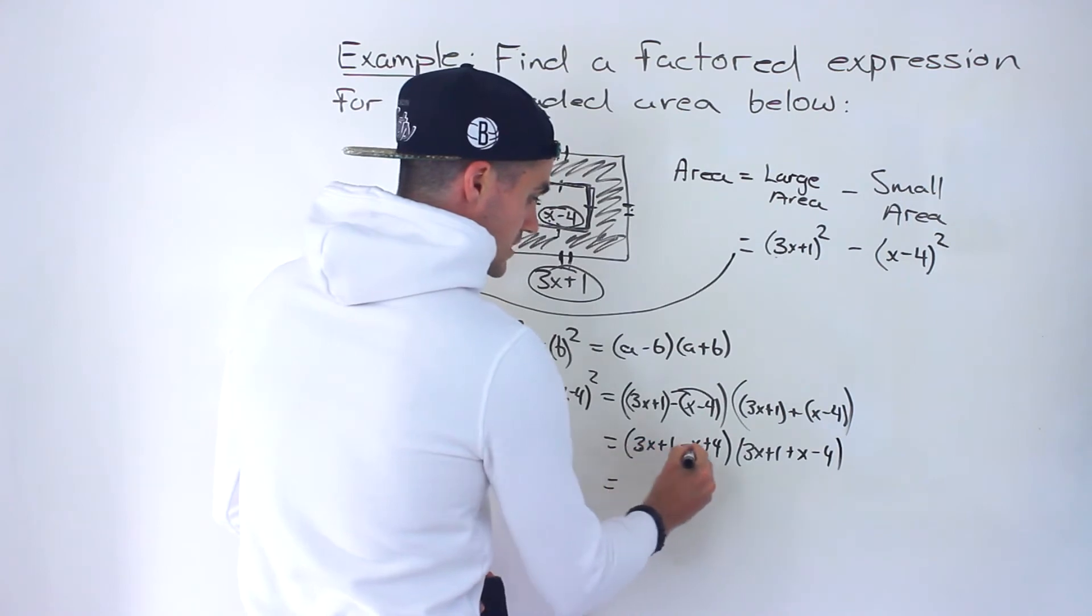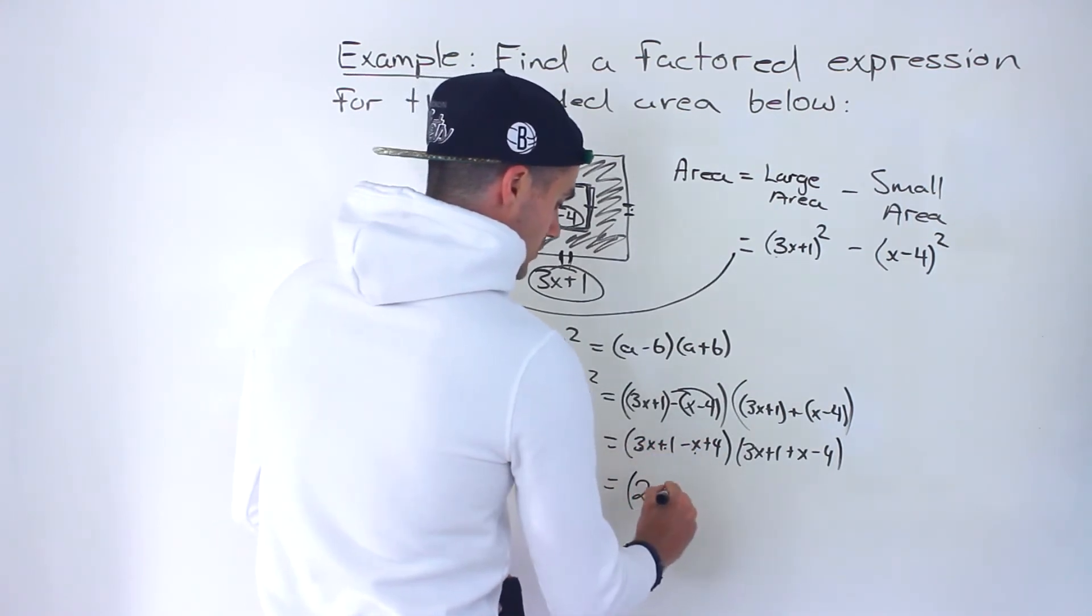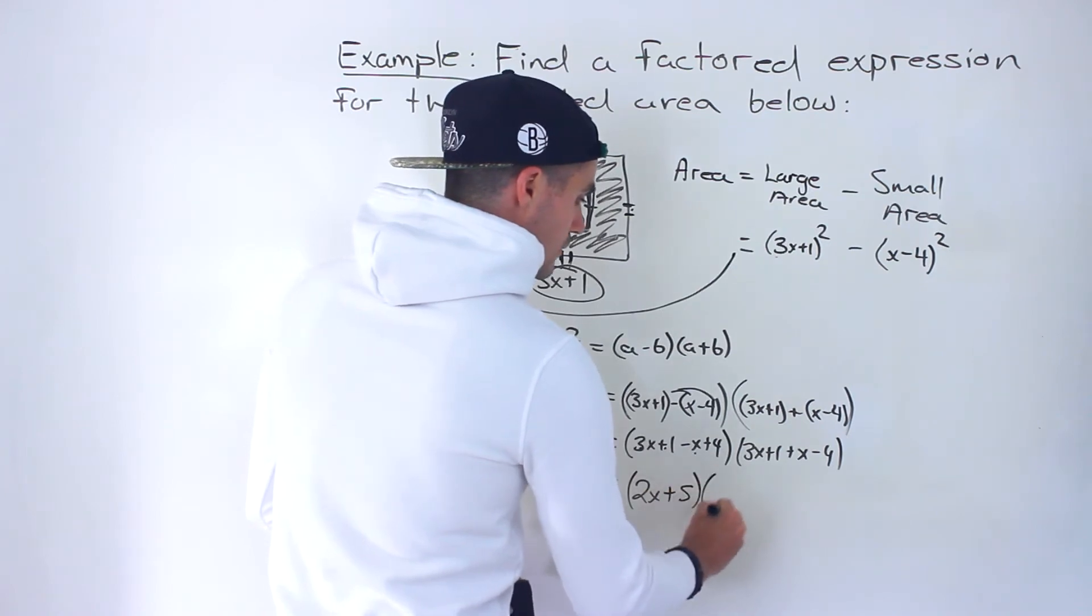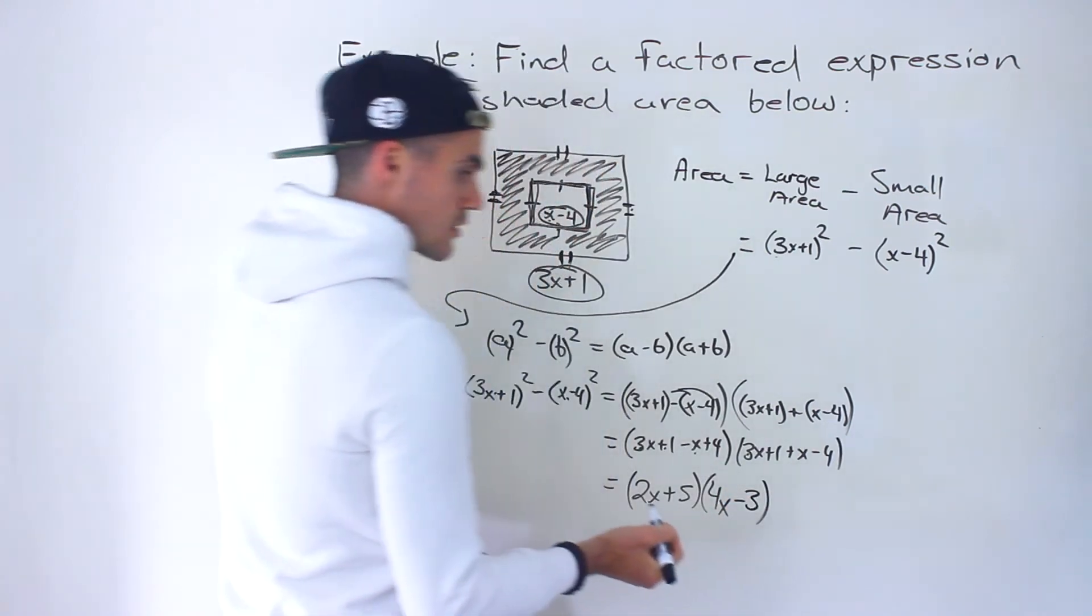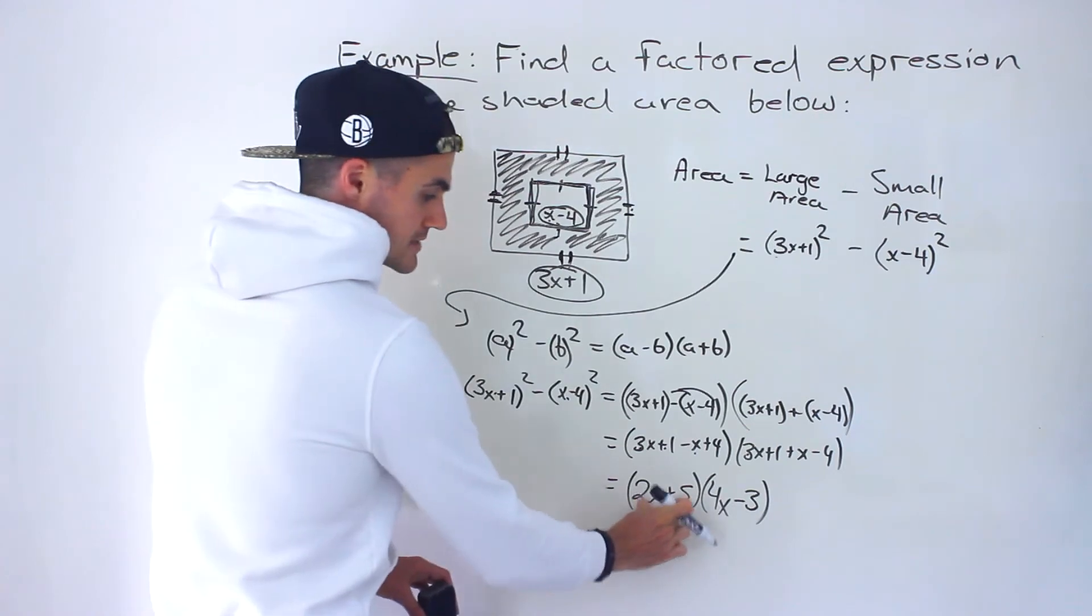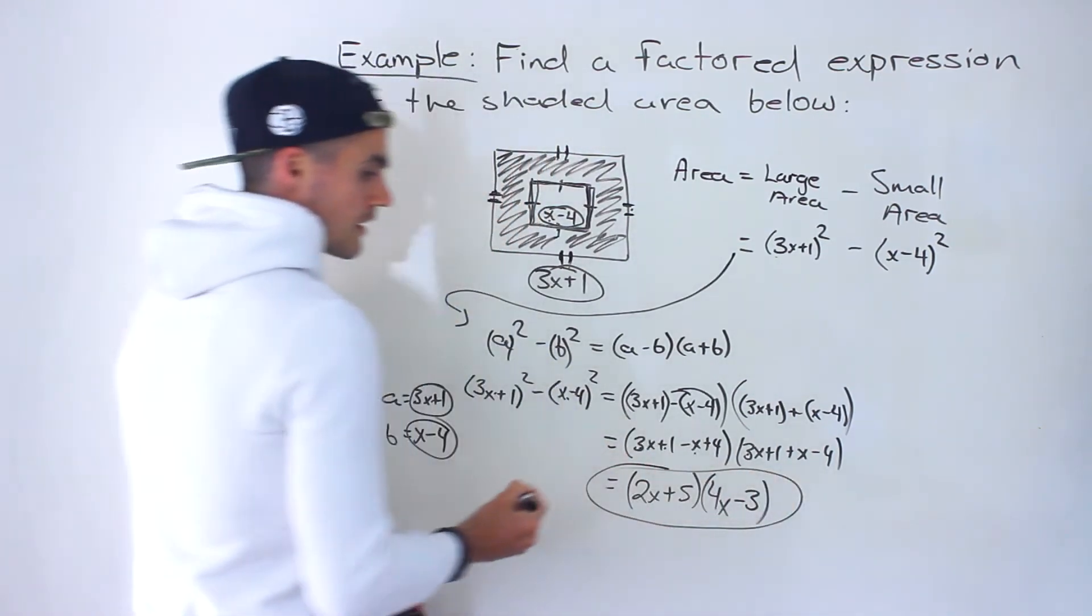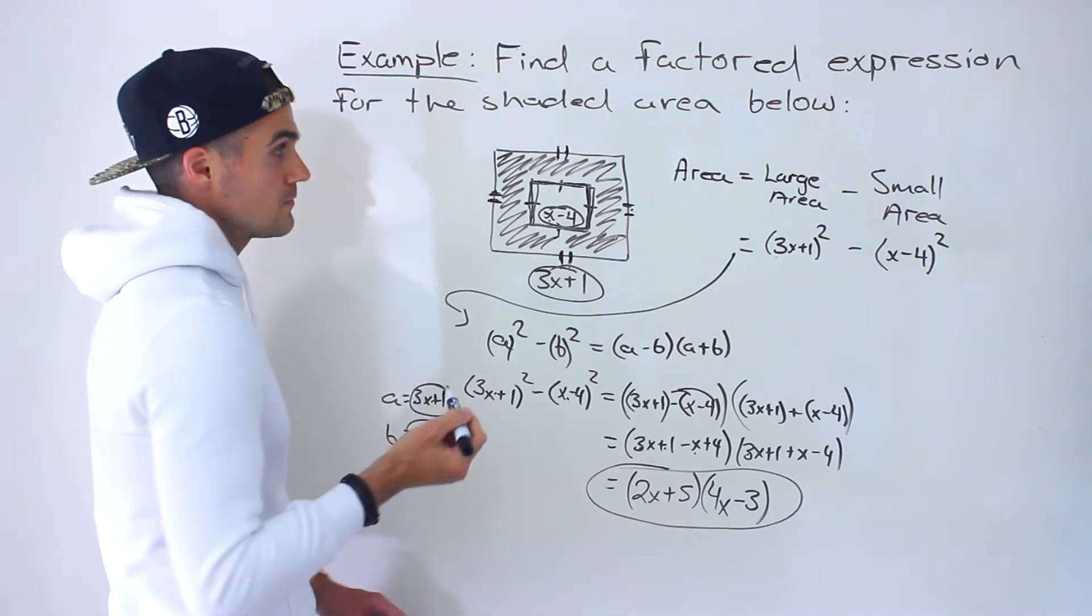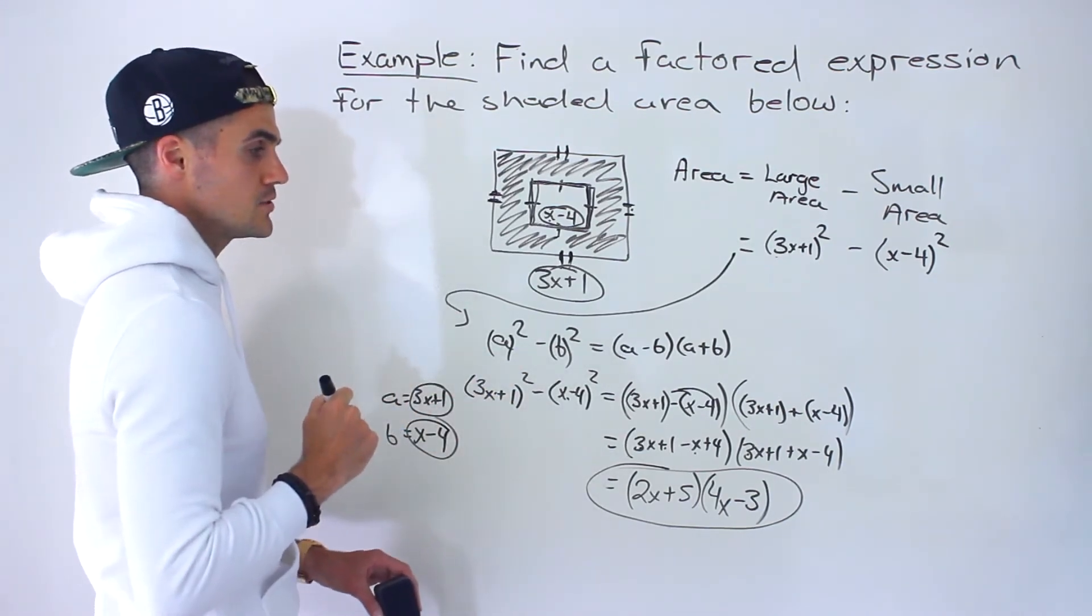Just collecting like terms in the brackets, 3x minus x gives us 2x, plus 1 plus 4 gives us plus 5. 3x plus x gives us 4x, 1 minus 4 gives us minus 3. Notice you can't factor this any further, you can't take anything out of that bracket. So that right there is the final answer for this particular question. This is probably the more popular method to do it.